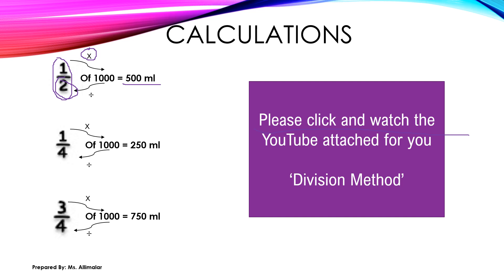Once you look at this slide, please watch the video — you may need to replay it. Now look at number two: one over four of 1000. Just now I said one quarter equals 250 milliliters. Same method: look at the numerator, which is one. One times 1000 is 1000. Then divide 1000 by four, and you get 250 milliliters. For all division, please click the division method YouTube video.